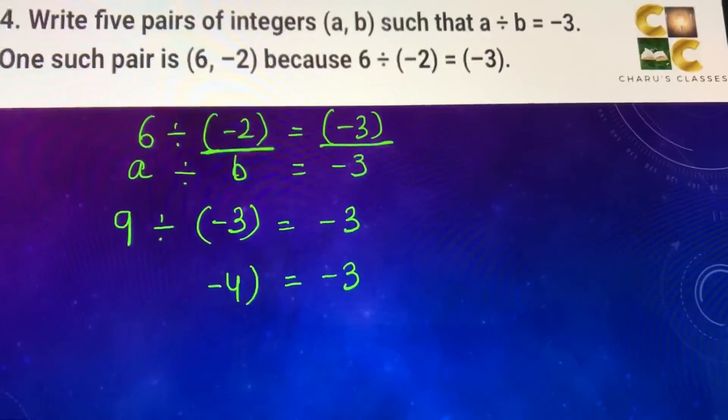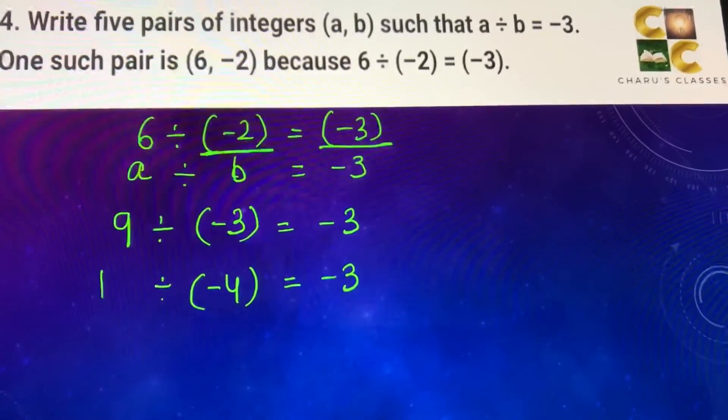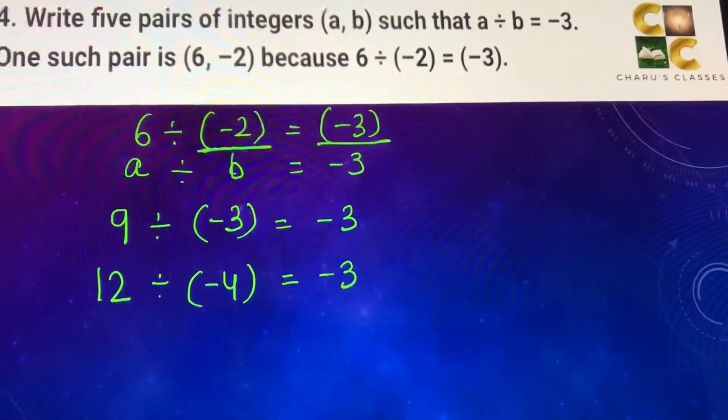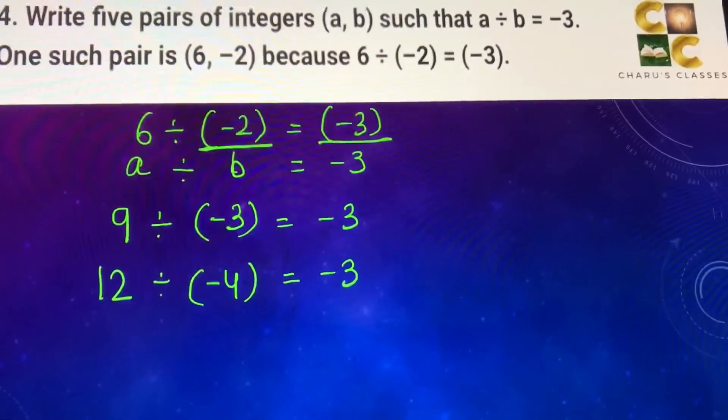Minus 3 to minus 4, if we multiply, we get 12. So another pair we can write is 12 divided by minus 4 is minus 3.